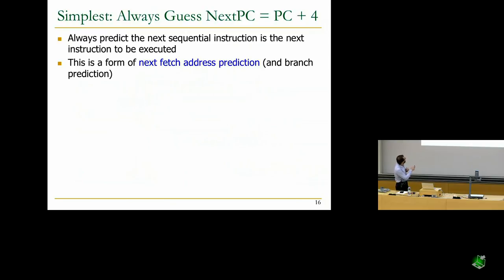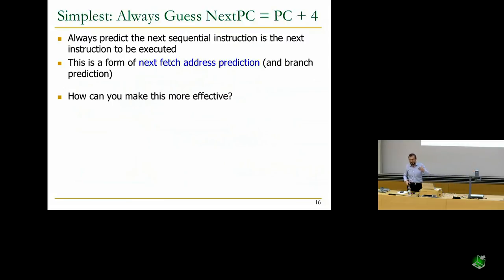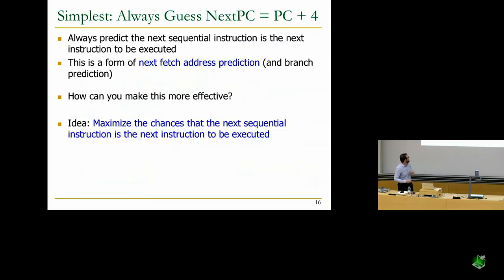This is a form of next fetch address prediction. It may not always be good because you're always predicting the next sequential instruction after a branch. So people have developed methods to maximize the chances that the next sequential instruction is indeed the next instruction to be executed.